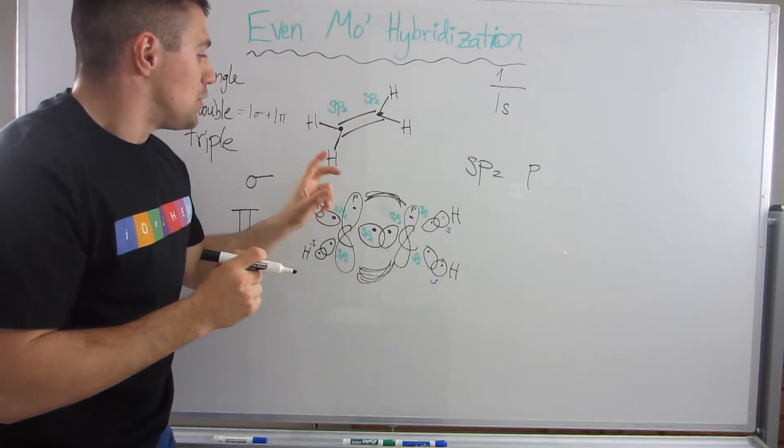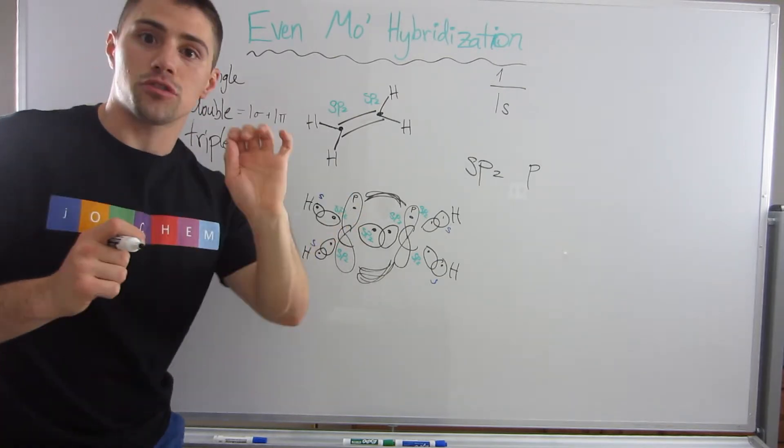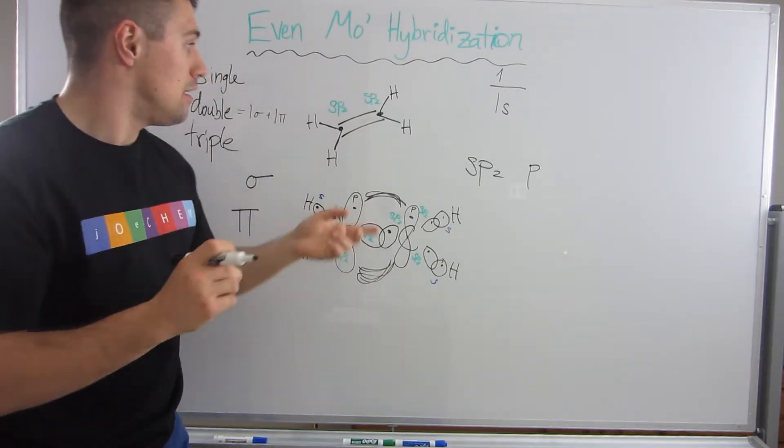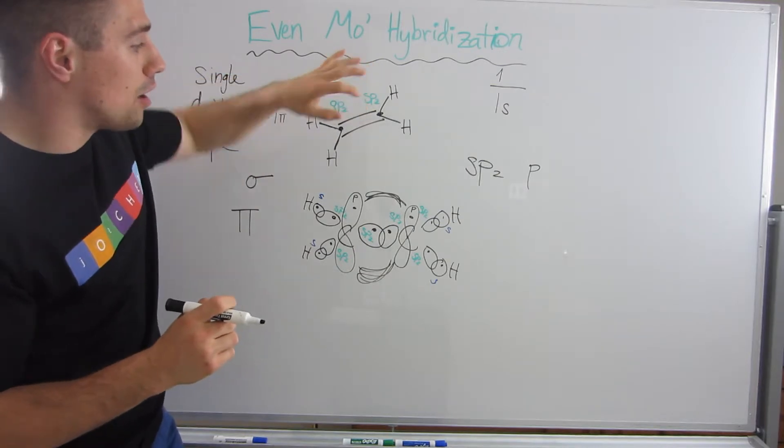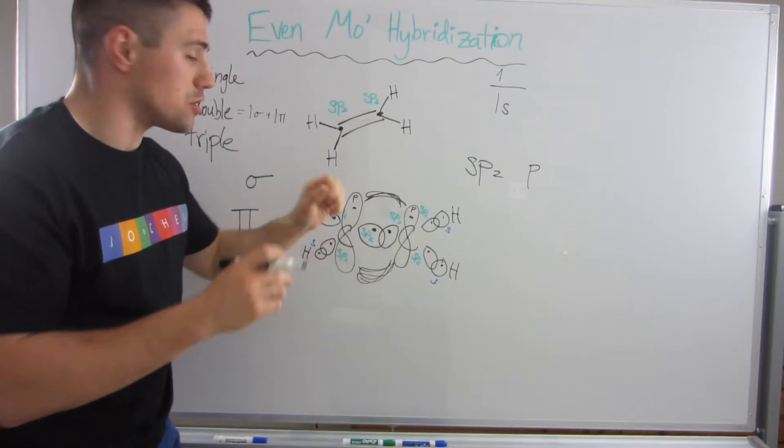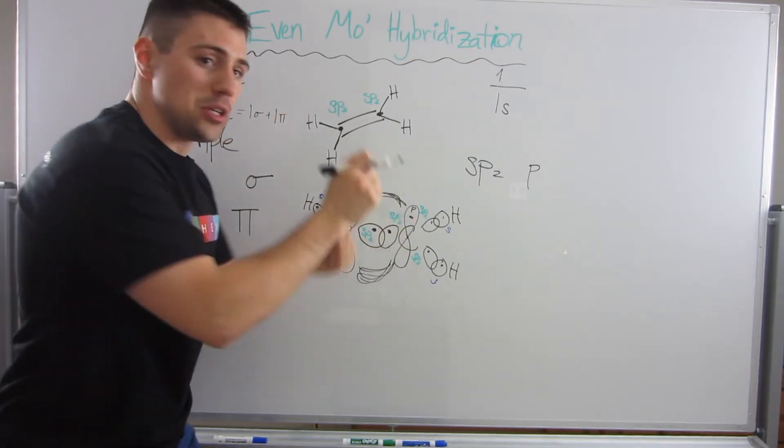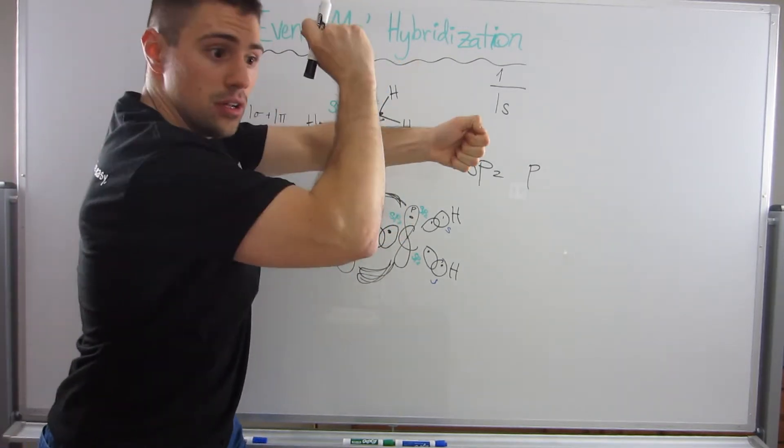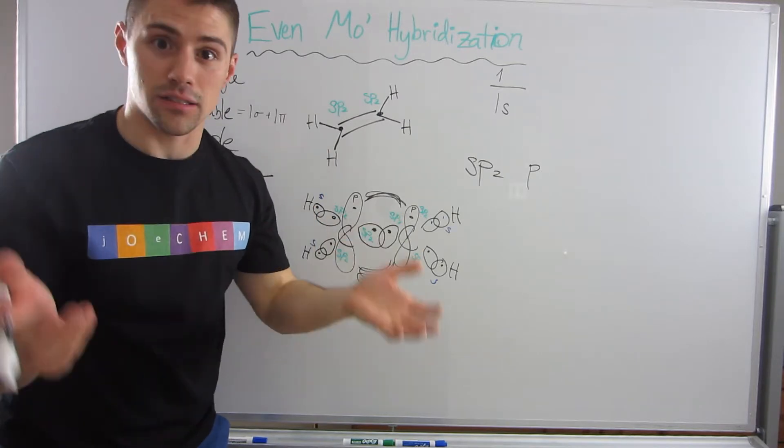Sigma bonds can just rotate with no problem. But if you tried to rotate this bond in ethene, you can't do it. If you were to twist it, this set of p orbitals would no longer be parallel, and it would actually break the double bond.